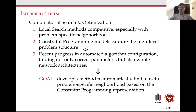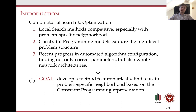The constraint programming community has created tools to model problems and can capture high-level problem structure, making them easier to develop. Recently, we have seen quite a progress in automated algorithm configuration. At the moment, we are not only looking for correct parameter values, but also searching for the best network architectures for combinatorial problems. Given that, my goal is to develop a method to automatically find a useful problem-specific neighborhood based on the constraint programming representation.